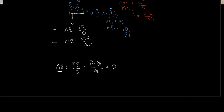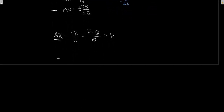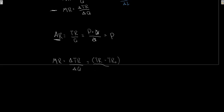What about marginal revenue? Marginal revenue is the change in total revenue for a change in output — if I produced and sold one more unit, how much does my revenue increase? Opening this up: using delta notation, that's (TR₁ - TR₀) divided by (Q₁ - Q₀), which we can expand as (P·Q₁ - P·Q₀) divided by (Q₁ - Q₀).